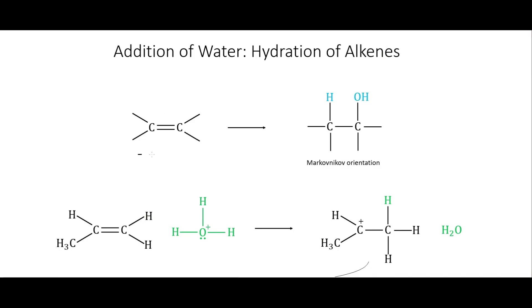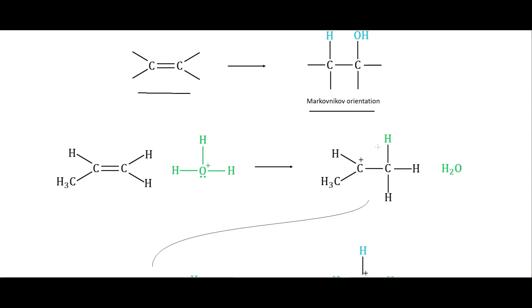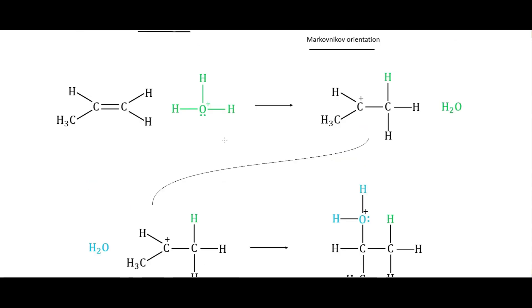We start with our alkene and when we add water to it we see we have two H's and an oxygen, so H2O is being added, and this will be in the Markovnikov orientation. The mechanism: the electrons from this double bond, which are more loosely bound to the carbons, are going to go onto that carbon. Then these electrons from that hydrogen-oxygen bond move to the positively charged oxygen on the hydronium ion, and we break the pi bond in the double bond.